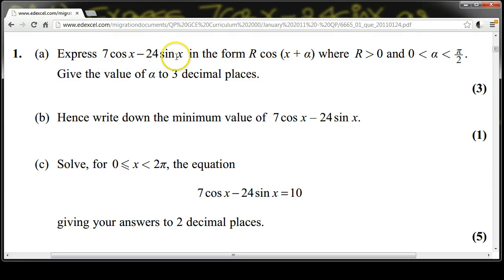Express 7cos(x) minus 24sin(x) in the form r·cos(x+α), where r is greater than 0 and α lies between 0 and 2π. Give the value of α to 3 decimal places. Hence write down the minimum value of 7cos(x) minus 24sin(x). Solve for x between 0 and 2π the equation 7cos(x) minus 24sin(x) equals 10, giving your answers to two decimal places.